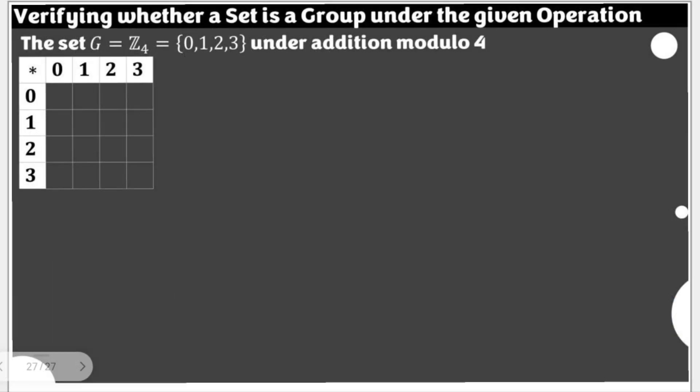In verifying whether the given set is a group under the given operation, let's start and focus first on the completion of the given Cayley's table. We have here the set G or Z sub 4, which contains the elements 0, 1, 2, and 3 under addition modulo 4. Take note that for operations involving modulo, we are talking about here the remainder when a certain number is divided by, in this case, 4.